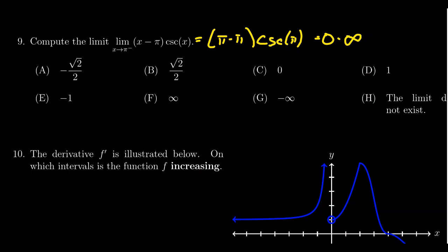Because we have this indeterminate form, we need to use L'Hôpital's rule. But since it's zero times infinity, we're not quite there yet, so we need to change from a product into a quotient.